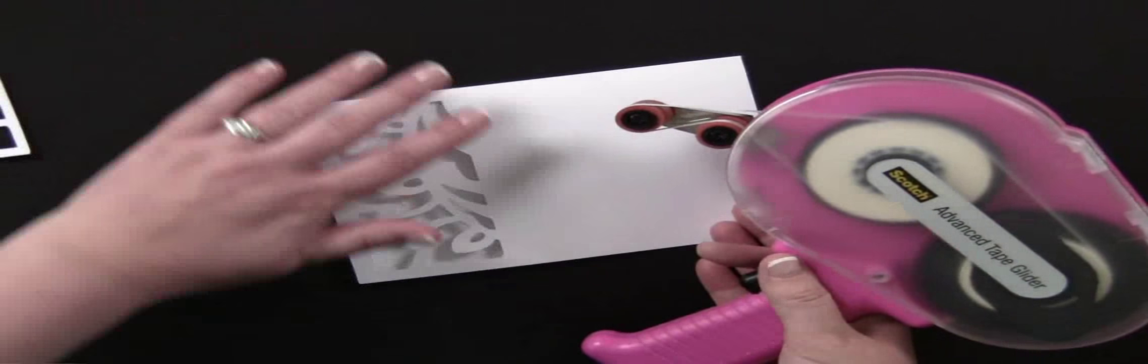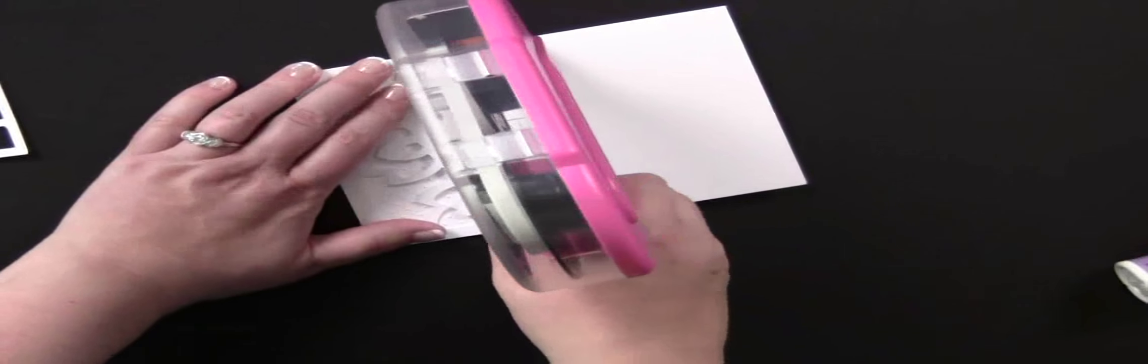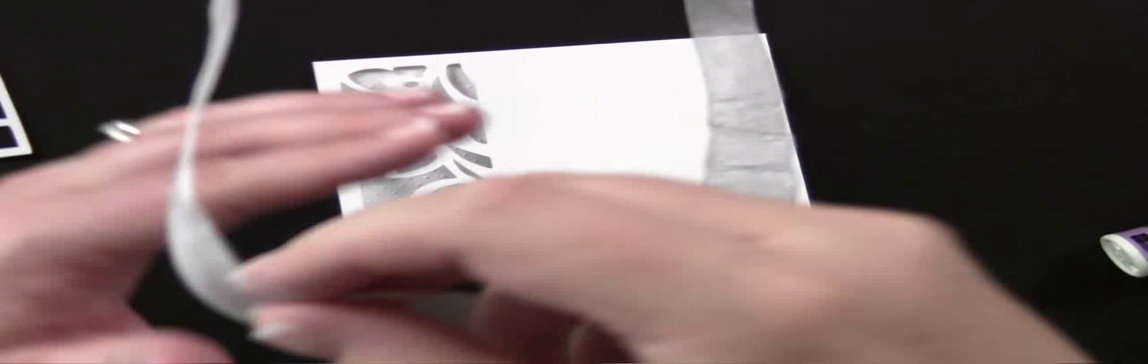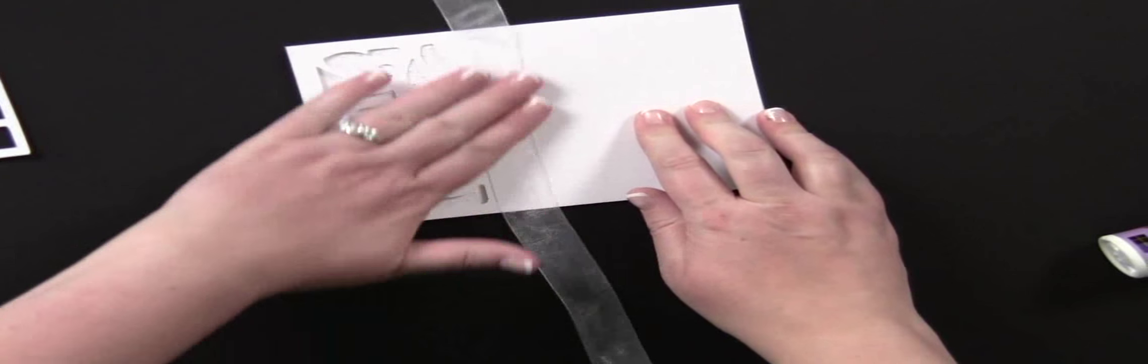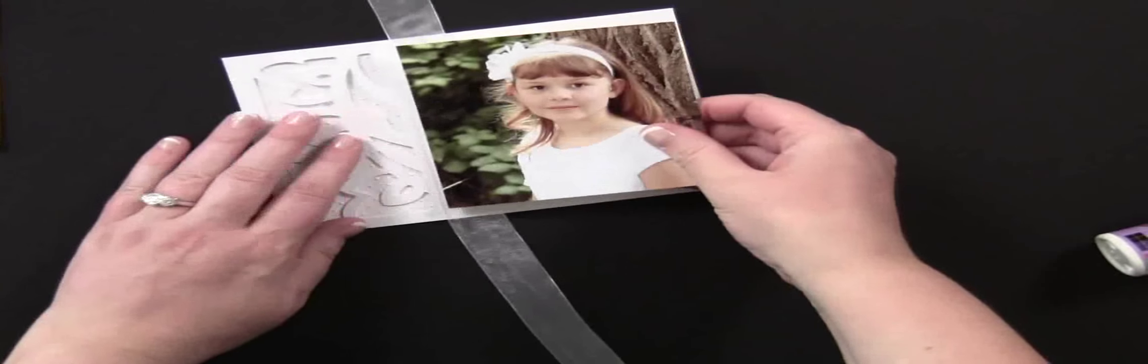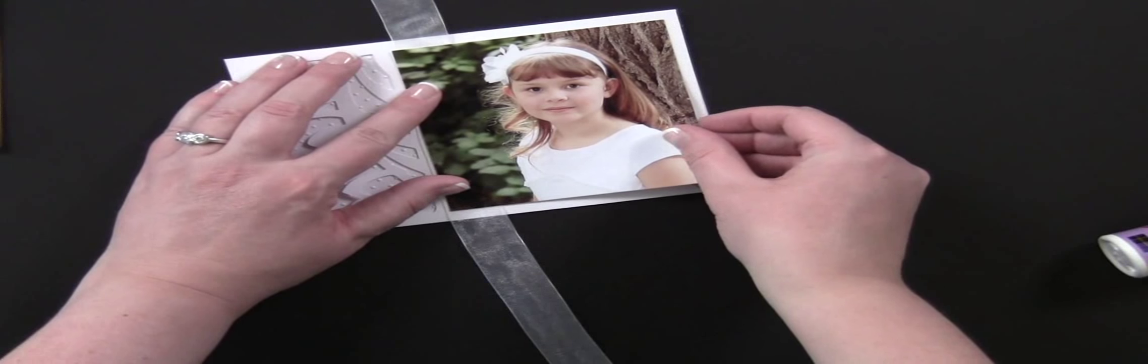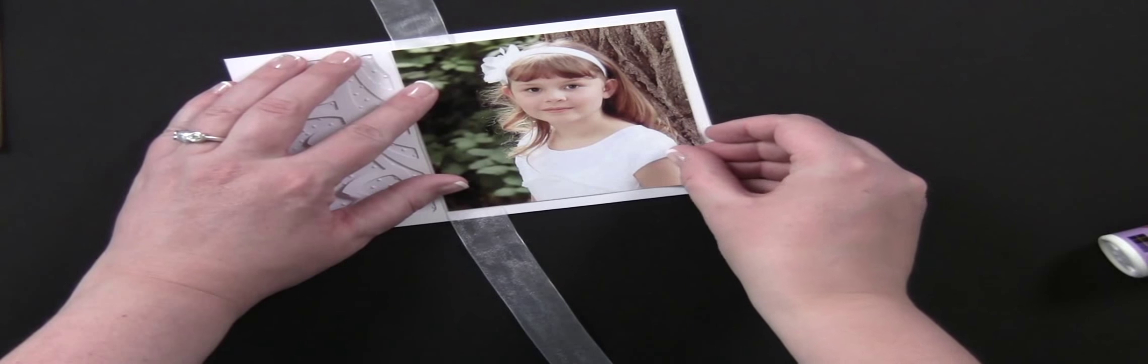So first things first, we're just going to run a length of the tape adhesive right here along this frame. That is going to secure our sheer ribbon in place, and we just place it on there like so. Next we're going to add adhesive to our photo, which I've already done. And then we're going to adhere that right next to this frame and just make sure we have it centered top to bottom, right over the ribbon.